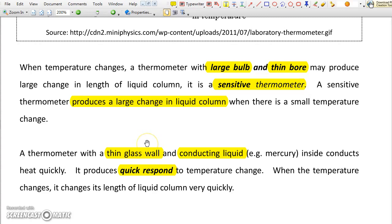A thin glass wall for the bulb and a conducting liquid such as mercury may improve the response of the thermometer so that the thermometer may give quick response to temperature change.